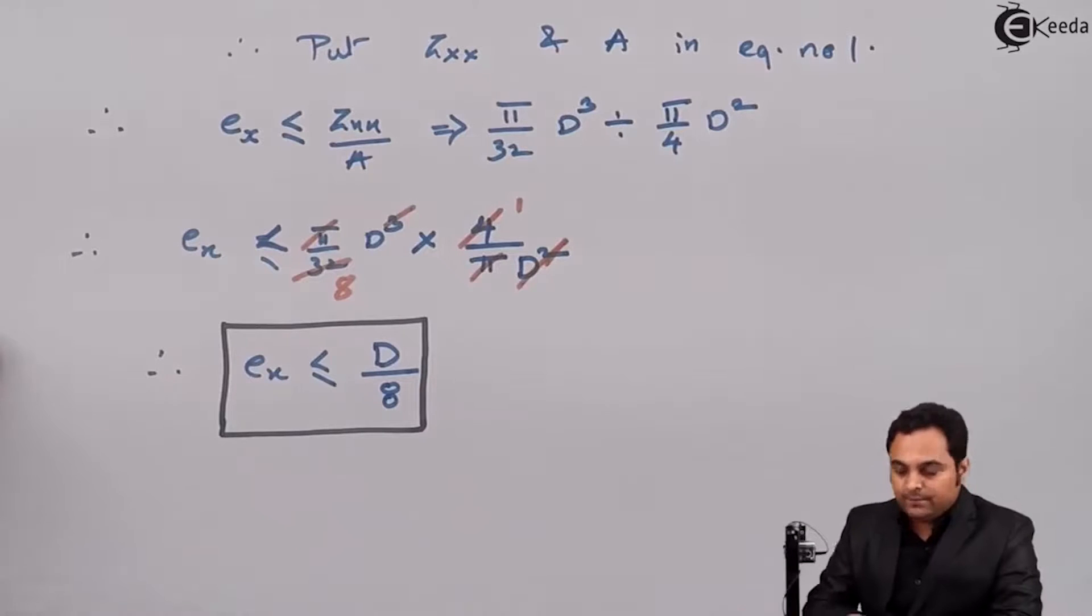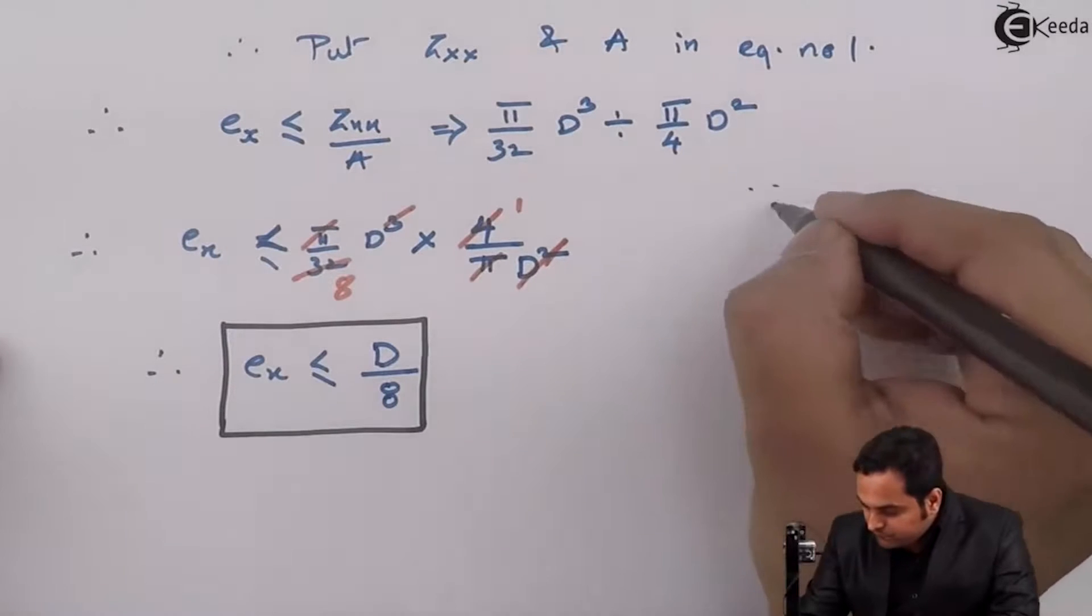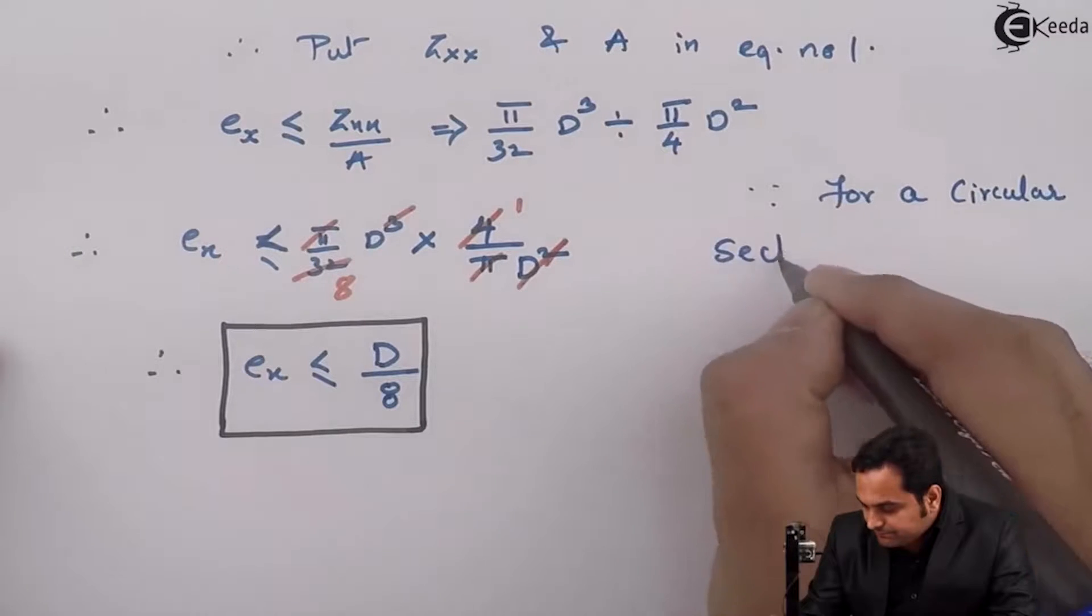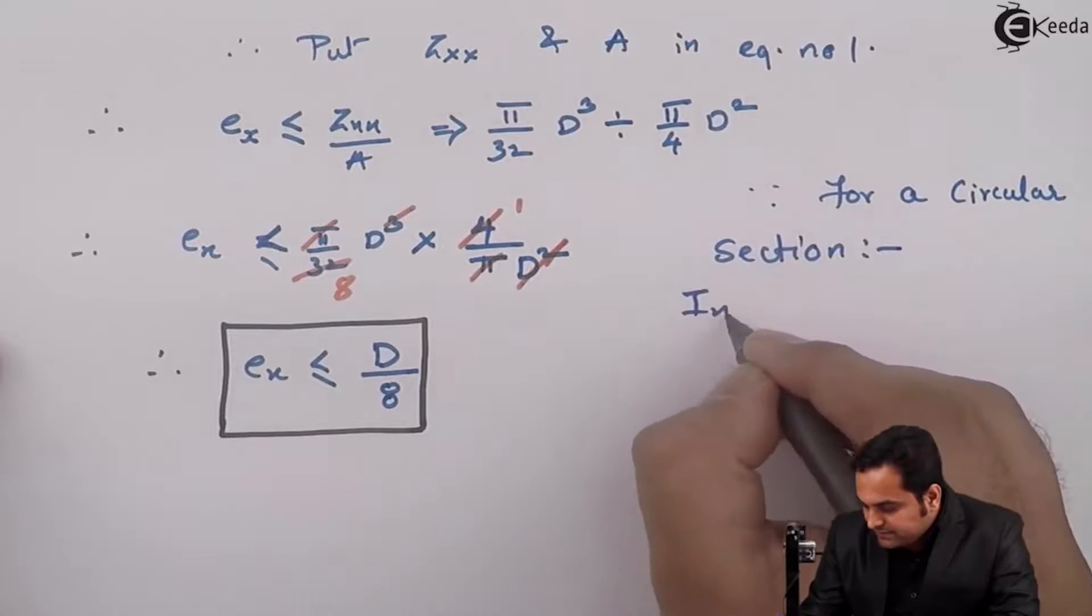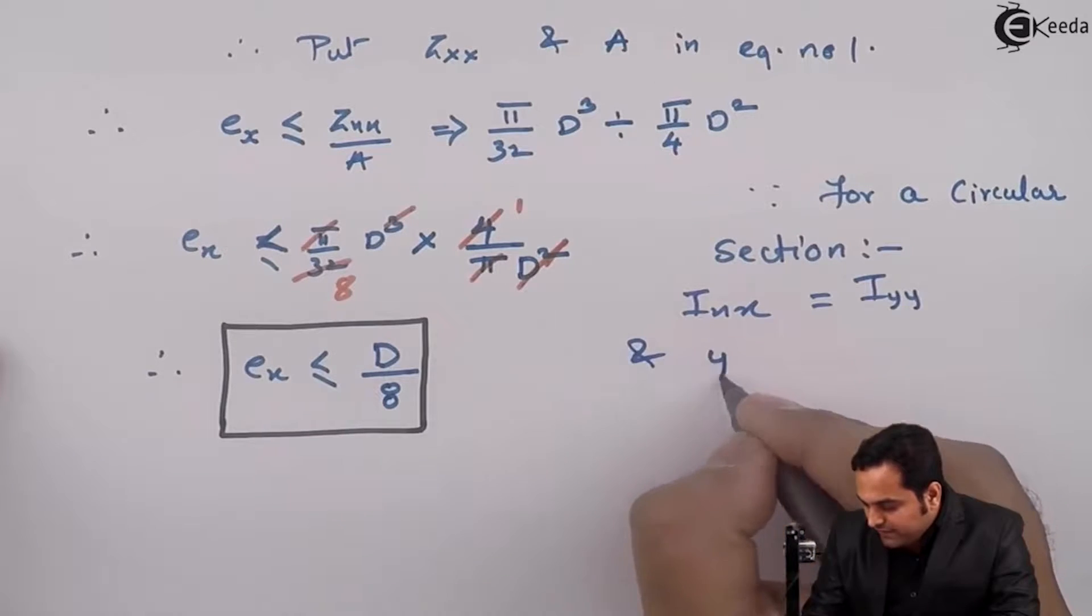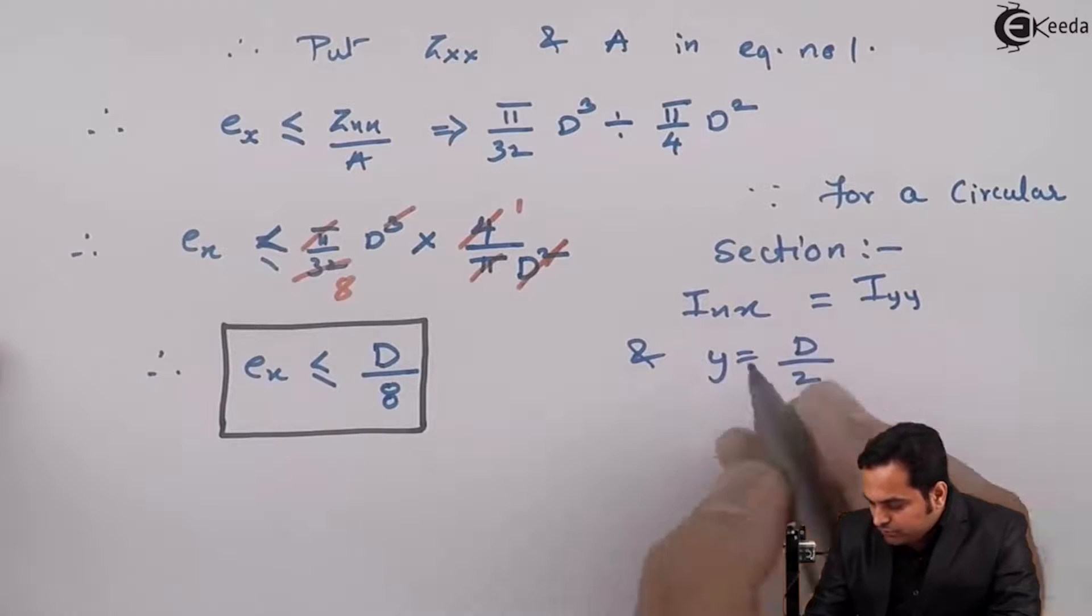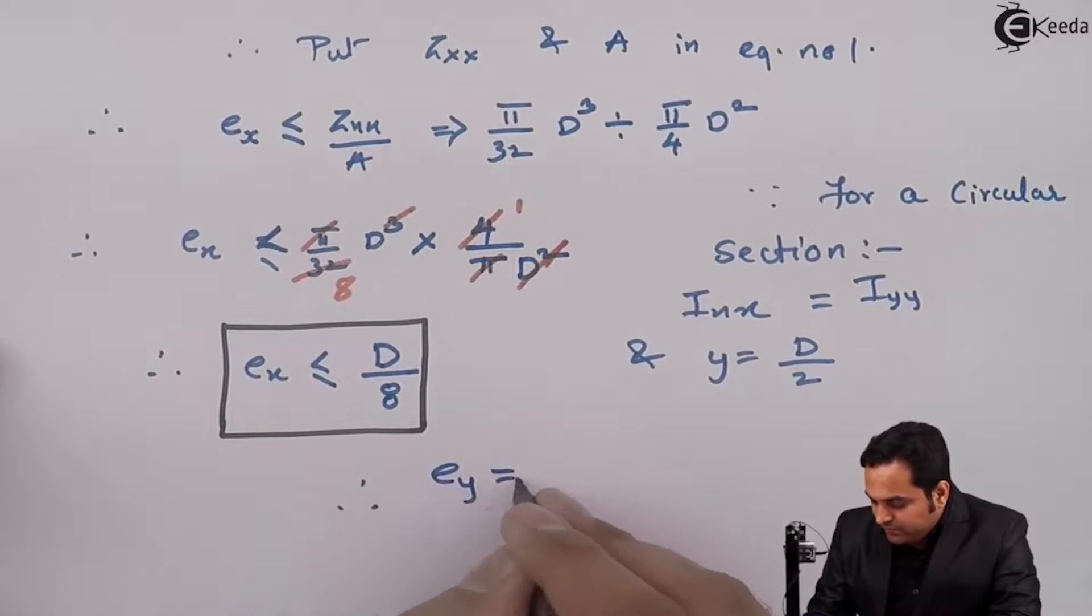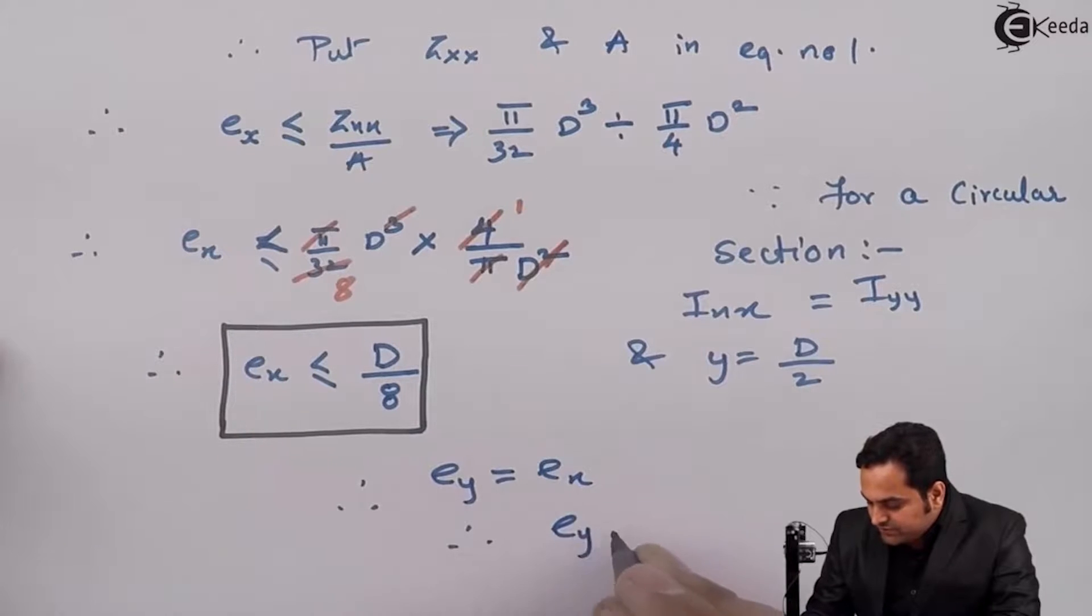Since for a circular section IXX equals IYY and y is the same D/2, therefore eccentricity with respect to y equals eccentricity with respect to x. So EY ≤ D/8.